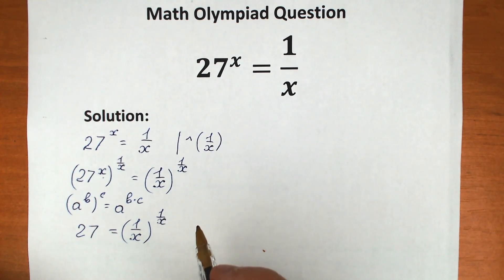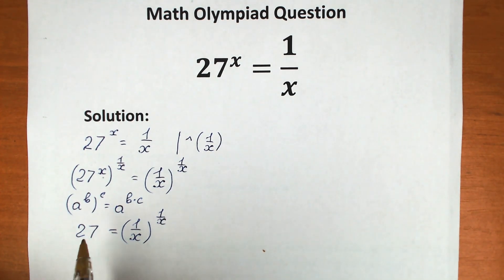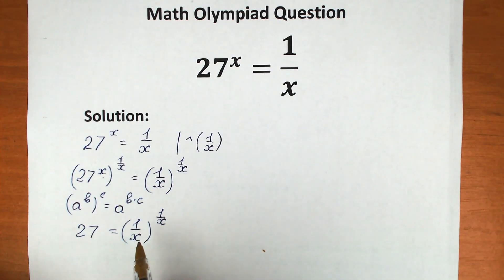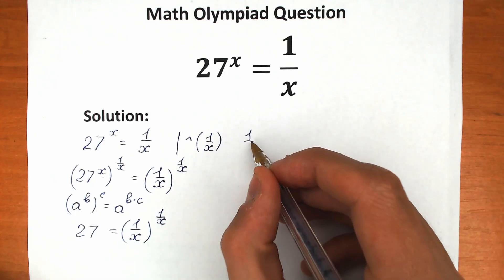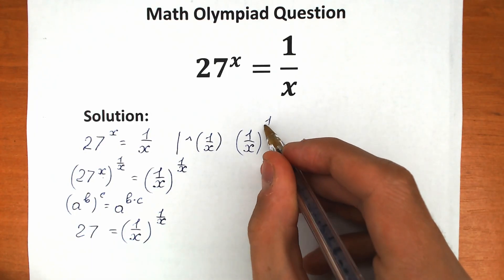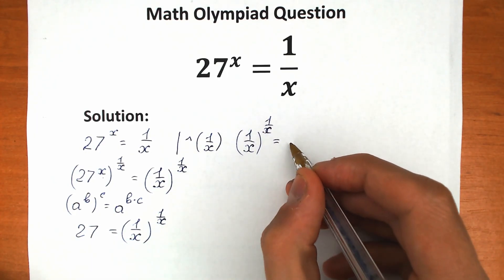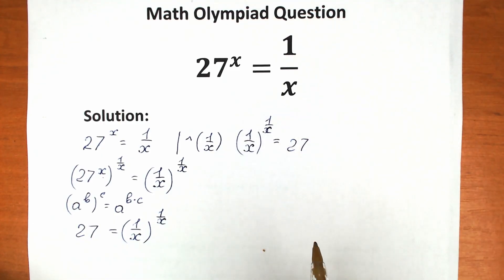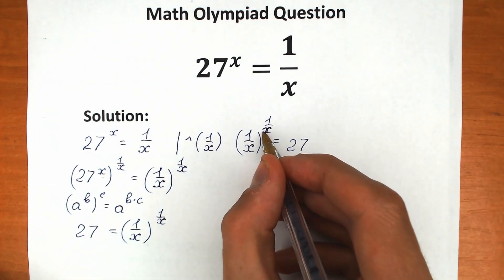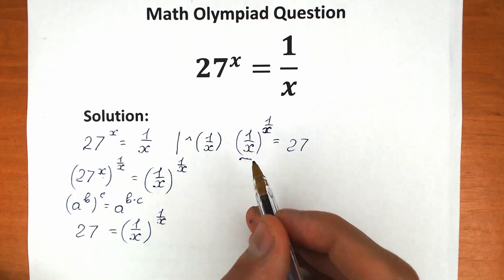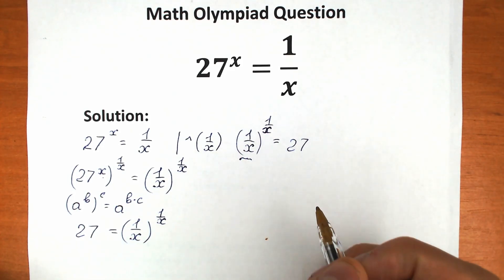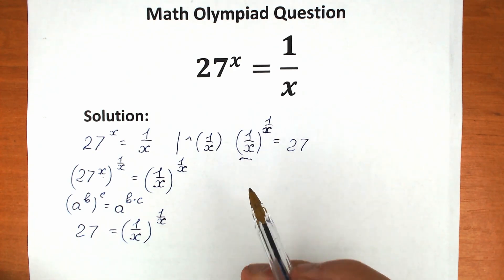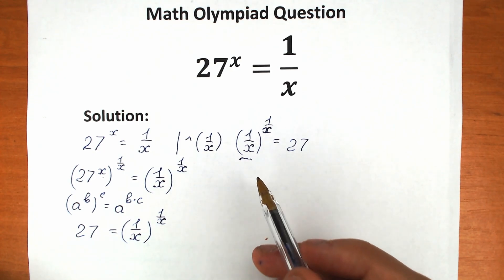What are we going to do next? Let's swap positions because we prefer our variables on the left hand side, not on the right hand side. So we have 1 over x to the power 1 over x equal to 27. If we look closely at this expression, we have the same base and the same exponent. And if we express 27 with the same logic — same base and same exponent — it will be a much easier thing for us.